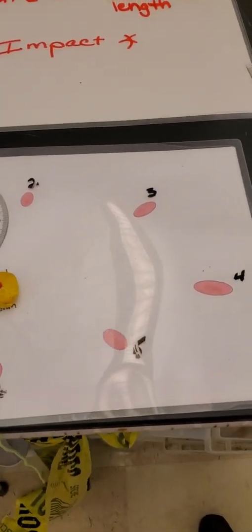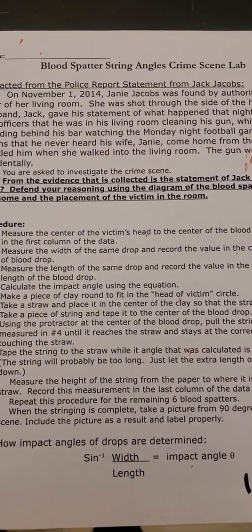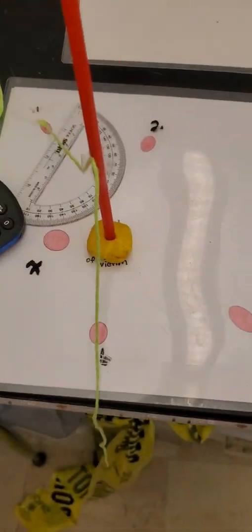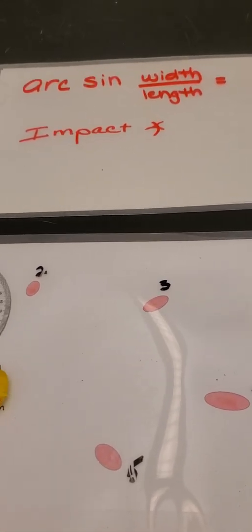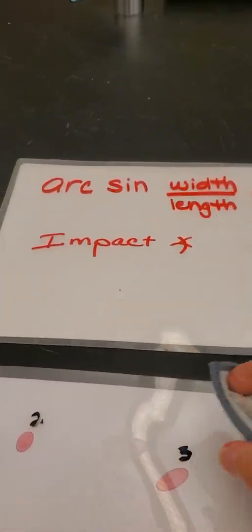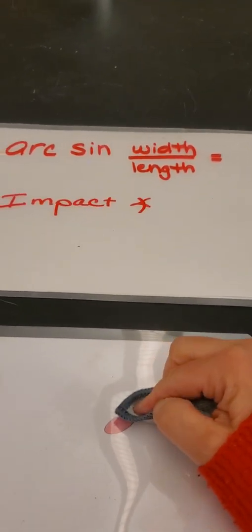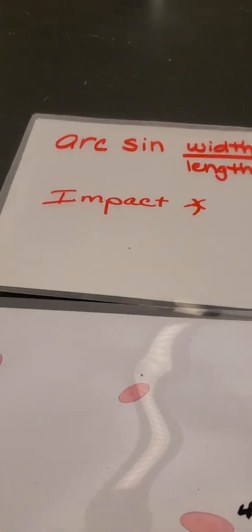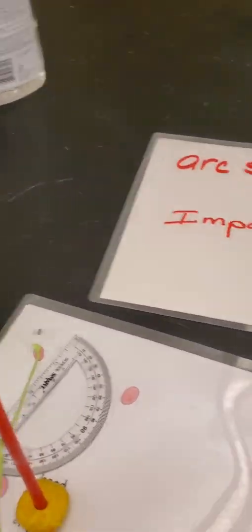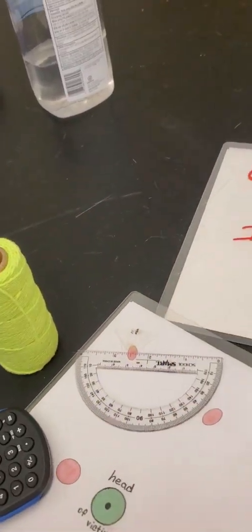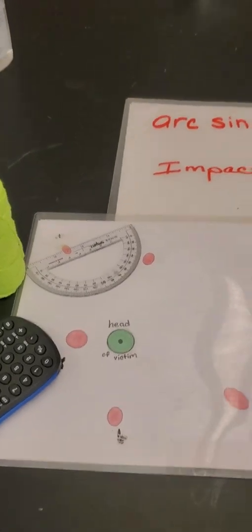There are written directions in the procedure if you need them alongside this video. This is not something to work on alone. When you're done, take a paper towel or rag and wipe off the numbers — make sure you used expo markers, not Sharpie, so they come right off. Dump the clay and straw, keep the strings if you want, clean up, and that's it. Good luck!